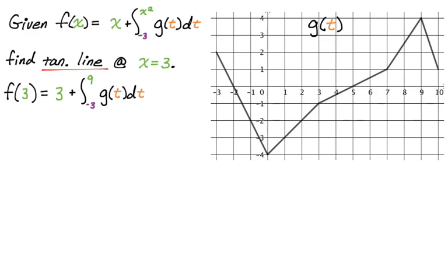That's where the graph comes in initially. To find f(3), I actually need to find the signed area, the accumulation from negative three to nine. So I need to evaluate this definite integral. I'm going to do that geometrically.